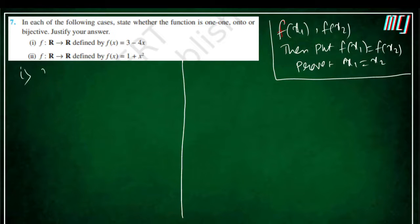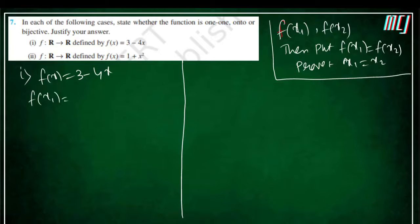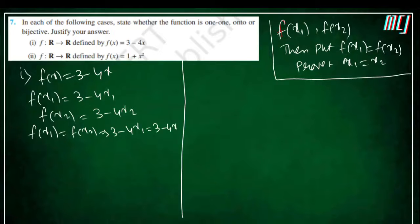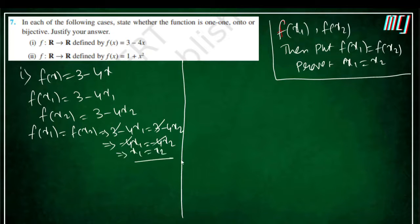Question number 1: f(x) = 3 − 4x. So here, f(x1) = 3 − 4x1 and f(x2) = 3 − 4x2. Now putting f(x1) equal to f(x2), we get 3 − 4x1 = 3 − 4x2. The 3s and −4 cancel, so x1 = x2. Therefore f is one-to-one.